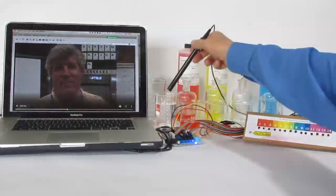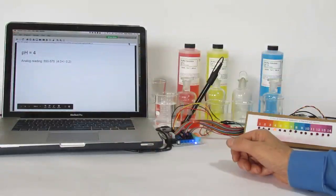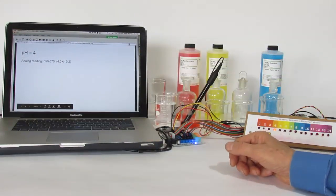Move it to one with pH 4 and the display changes in Google Slides to pH 4.